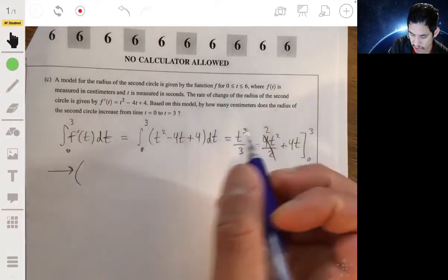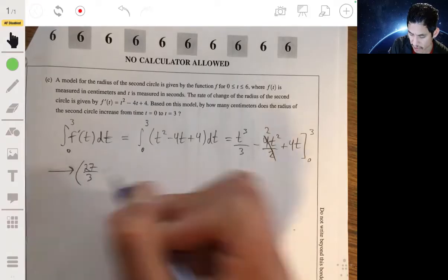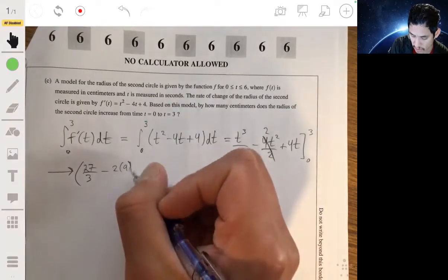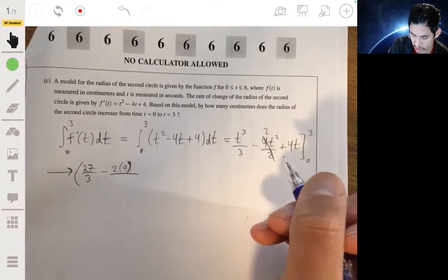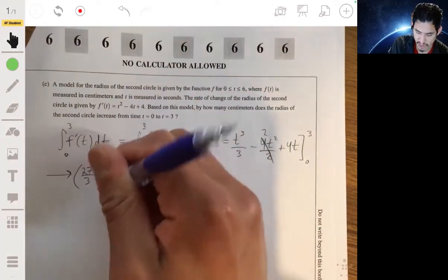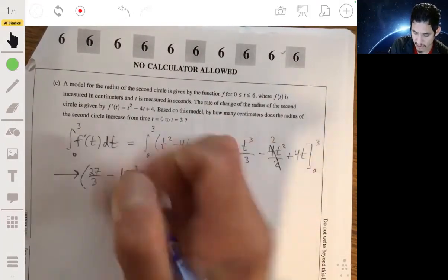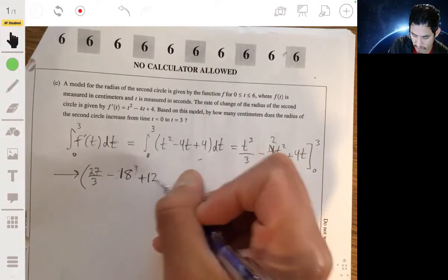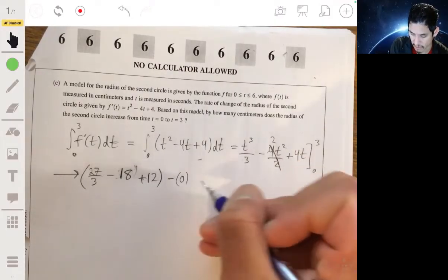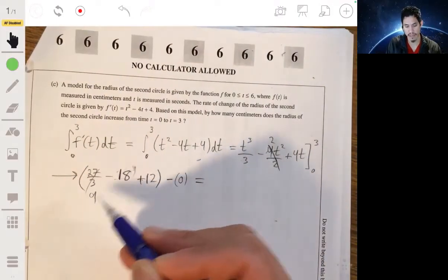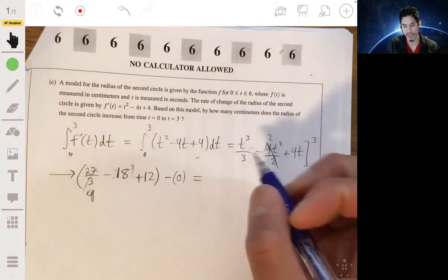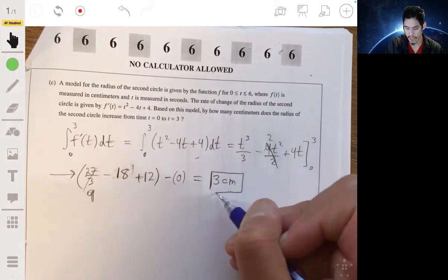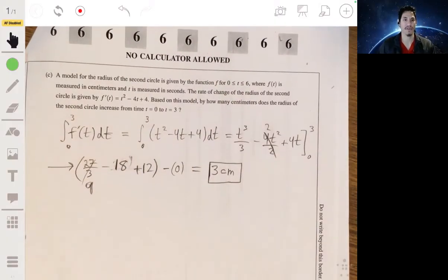And then we evaluate. So we get 3³ or 27 over 3 minus 2 times 3². It just becomes 18, minus 2 times 9, or just minus 18. Plus 4 times 3, so plus 12. When you plug in 0 into all of these, it's just 0. So this will just be 9 minus 18, negative 9, plus 12. Positive 3. And the units are centimeters. So it increases by 3 centimeters over that time period.